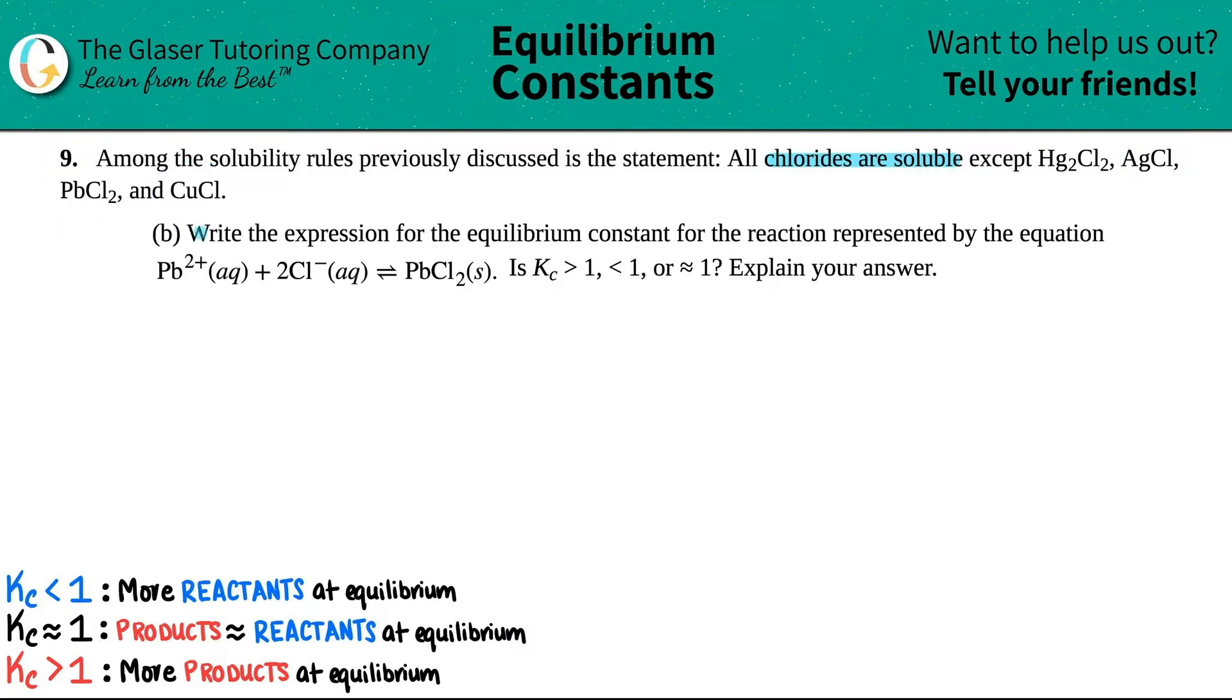Then we have letter B. Write the expression for the equilibrium constant for the reaction represented by this equation. So Pb²⁺(aq) plus 2Cl⁻(aq) yields PbCl2(s). And then is the Kc value greater than one, less than one, or equal to one? And then we'll explain our answer.